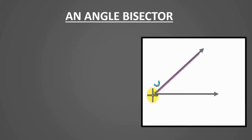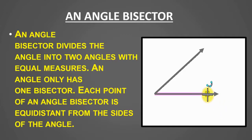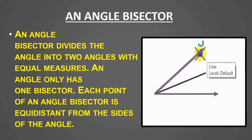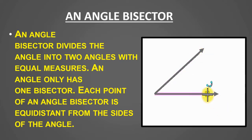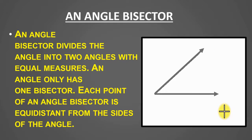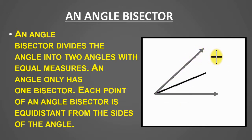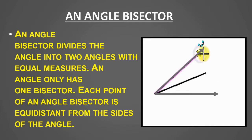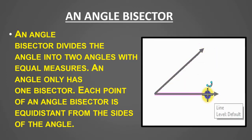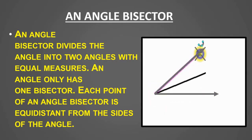Now we will see our main topic: the angle bisector. An angle bisector divides the angle into two angles with equal measure. An angle only has one bisector. Each point of an angle bisector is equidistant from the sides of the angle.